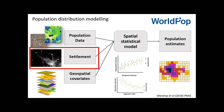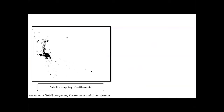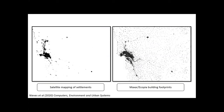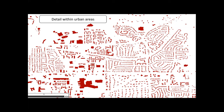An important ingredient is the mapping of settlements from satellite imagery. There have been many efforts to map where cities and towns are. Recently things have improved substantially — there are now datasets where every building in a country has been mapped from satellites. This helps improve the accuracy of population maps, because if we know where buildings are, we have a better estimate of where people are, especially in urban areas.